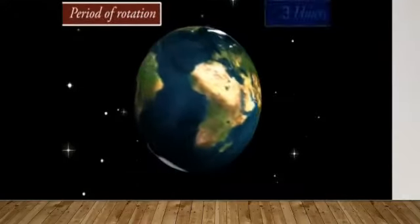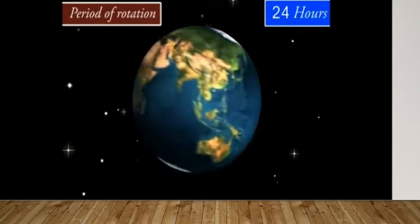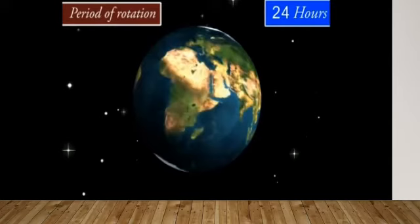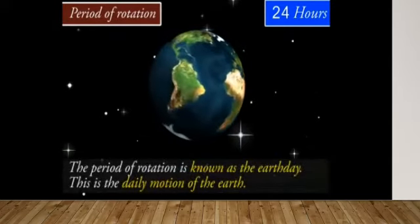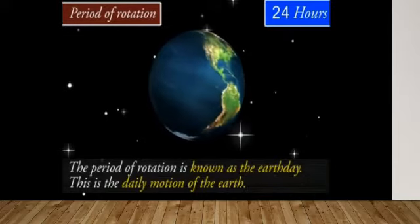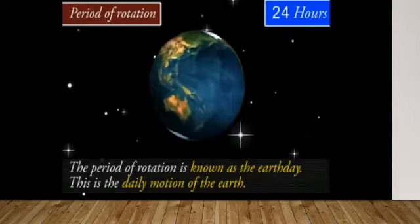Period of rotation: The Earth takes a time of about 24 hours to complete one full rotation. The period of rotation is known as the Earth day. This is the daily motion of the Earth.